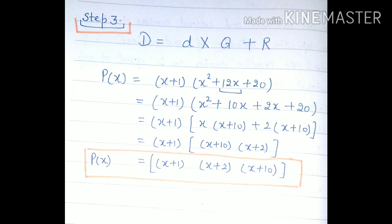Now in step three, we have to write the dividend formula: dividend = divisor × quotient + remainder. Here dividend is P(x), our polynomial, and divisor is x + 1, and quotient is x² + 12x + 20. The quotient is in quadratic form. After splitting its middle term, we will obtain the other two factors which are x + 2 and x + 10.